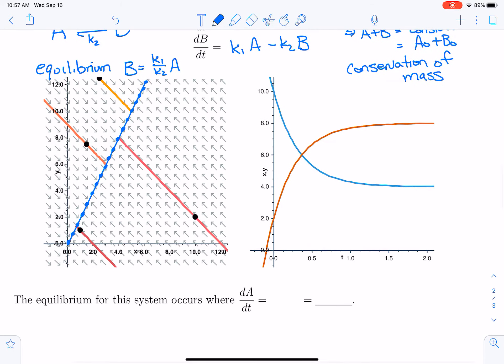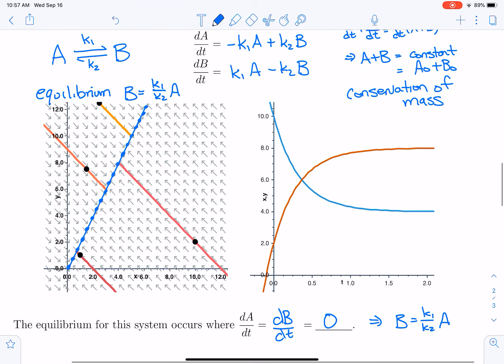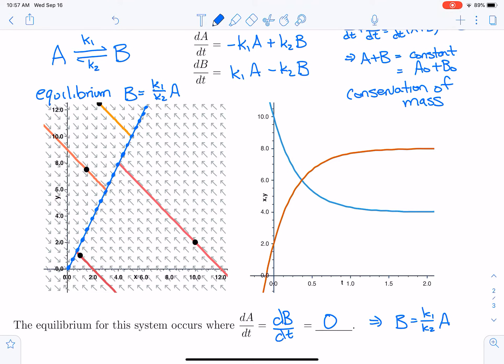Okay, so the equilibrium for that system does occur where dA/dt is equal to zero, but that's also where dB/dt is equal to zero. Okay, in that case, B must be k1 over k2 times A. And so that system is interesting because it has infinitely many equilibrium points.